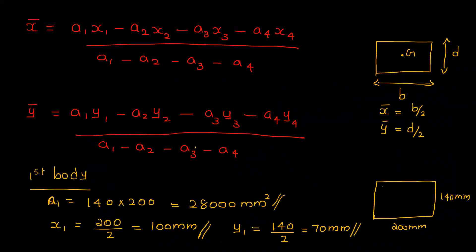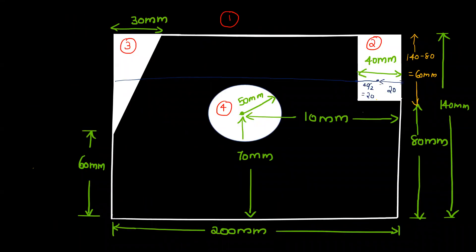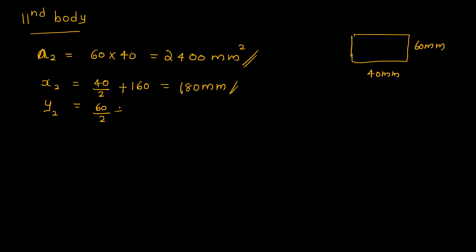Y2 is the distance from the X-axis to the centroid of the second body. That distance equals 80. So y2 equals 80 plus 30, which equals 110 mm.